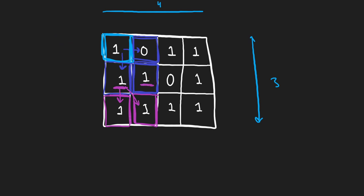If we want to know the largest square we can make from a position, we also have to check its sub-problems: below, diagonally, and to the right. We already went to some of these positions starting from a different direction, so we don't have to repeat that work. But there are positions we haven't checked yet, so we check those. We also have to check to the right, which we have not visited yet.